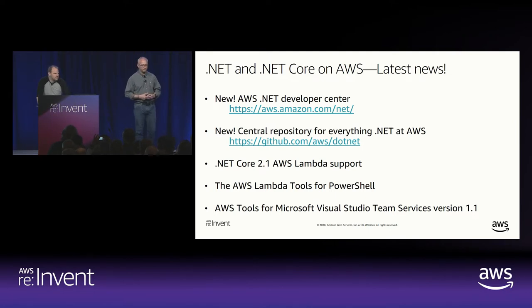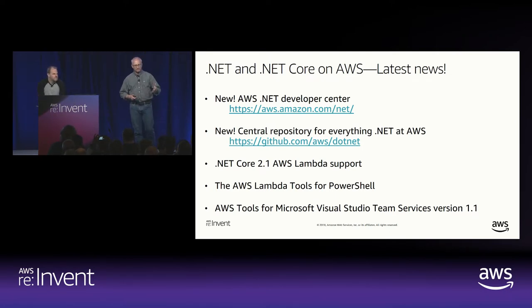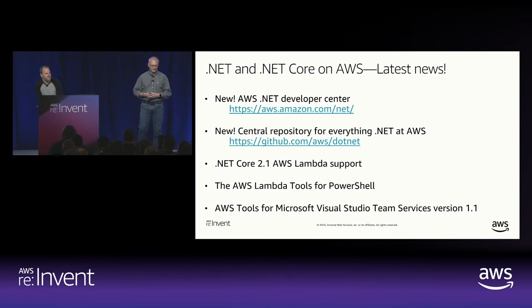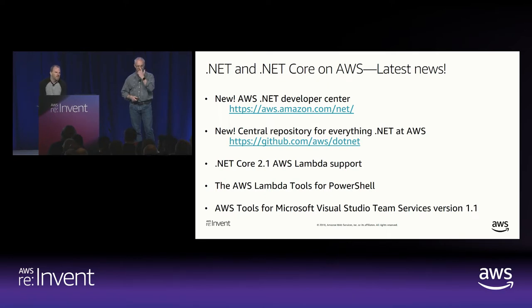We recently also launched a new repository on GitHub. Over the past few years, we've been increasingly open sourcing the tools for .NET. We've gathered links to all those repos into one central repository at github.com/aws/dotnet. It's been a busy year on Lambda. This year we launched two .NET Lambda runtimes — .NET Core 2.0 back in January, and then 2.1 in the summer.